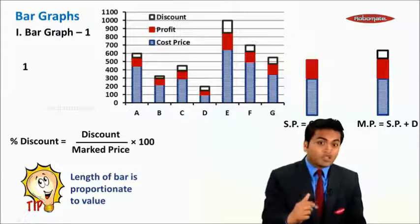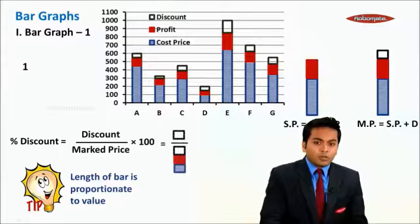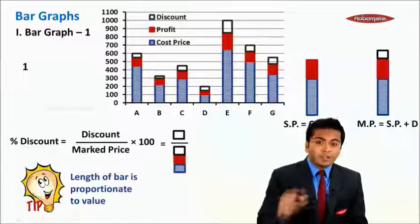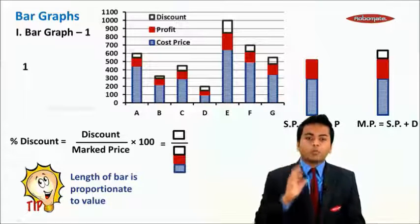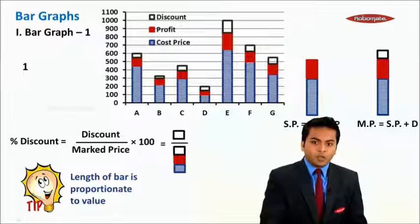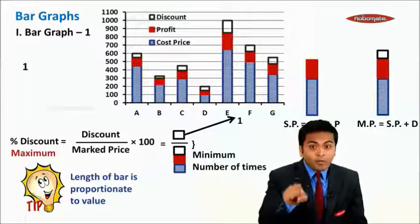Let's see this method and see how we can save time. The discount is nothing but the white bar, and market price is nothing but white plus red plus blue colored bars.